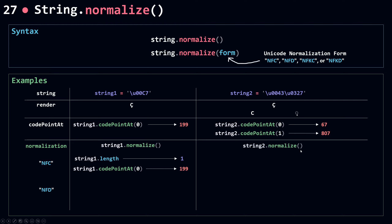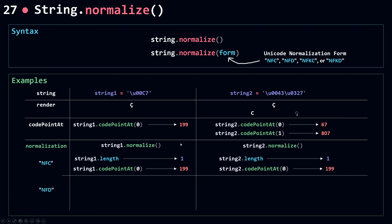Now calling string2.normalize with NFC (the default): it decomposes string2 — which is already decomposed — and then recomposes it into a single Unicode codepoint equivalent to those two codes. After normalization, string2.length returns 1 instead of 2, and codePointAt(0) now returns 199, the same as string1. So comparing string1 and string2 after NFC normalization returns true.